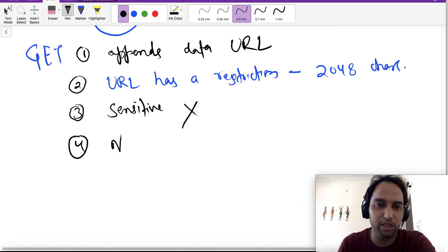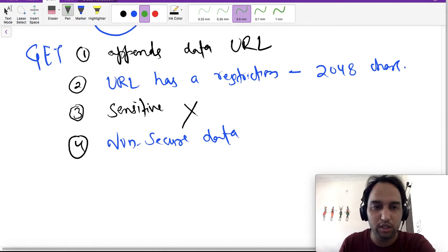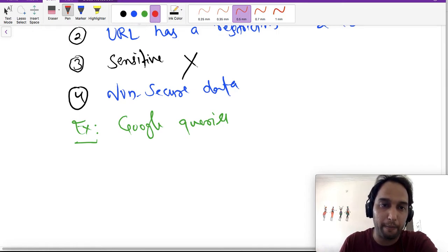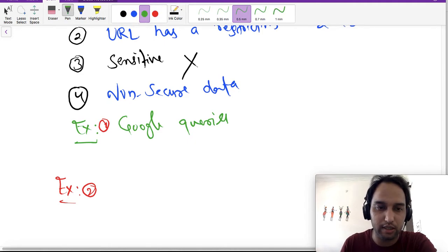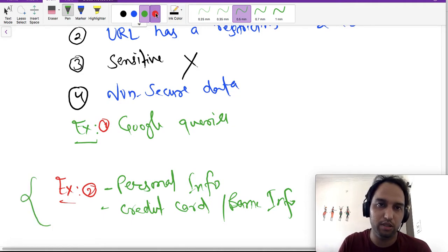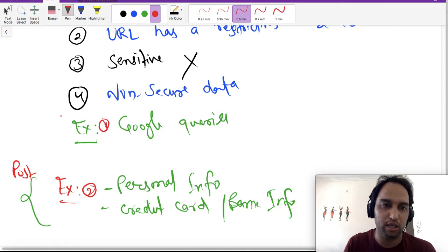Fourth point: you can use it for sending non-secure data. What kind of non-secure data am I talking about? Let's take an example like Google queries. You search anything - whenever you search something, that is not very confidential or that's not so much sensitive like some other information. Other information I am talking about is like your personal information or maybe your credit card or bank information. These kinds of information are very sensitive, so we can't send these with GET method and we need to use POST method for this.